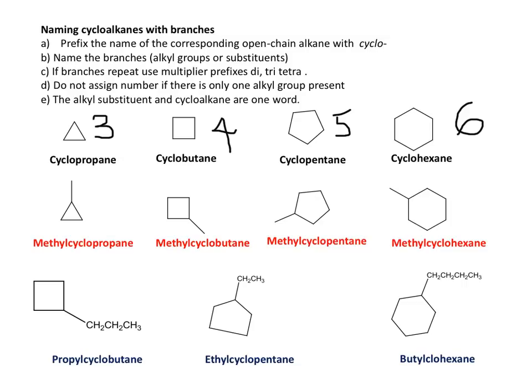When we have only one substituent, we do not need to state the position of the alkyl branch. We just say what is the name of the alkyl substituent in front of the name of the cycloalkane.